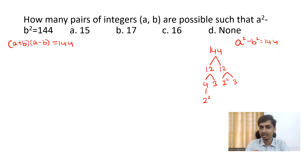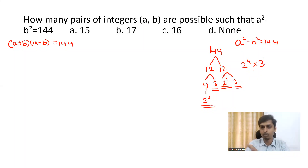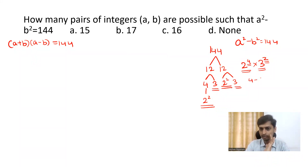How many 2s are in 144? You have four 2s — 2 to the power 4. And how many 3s? Two 3s — 3 squared. Now, whatever number appears in the power of each prime, you add 1 to it and multiply: it is (4 plus 1) times (2 plus 1), which is 5 times 3, giving you 15. That means there are totally 15 factor possibilities for the number 144.